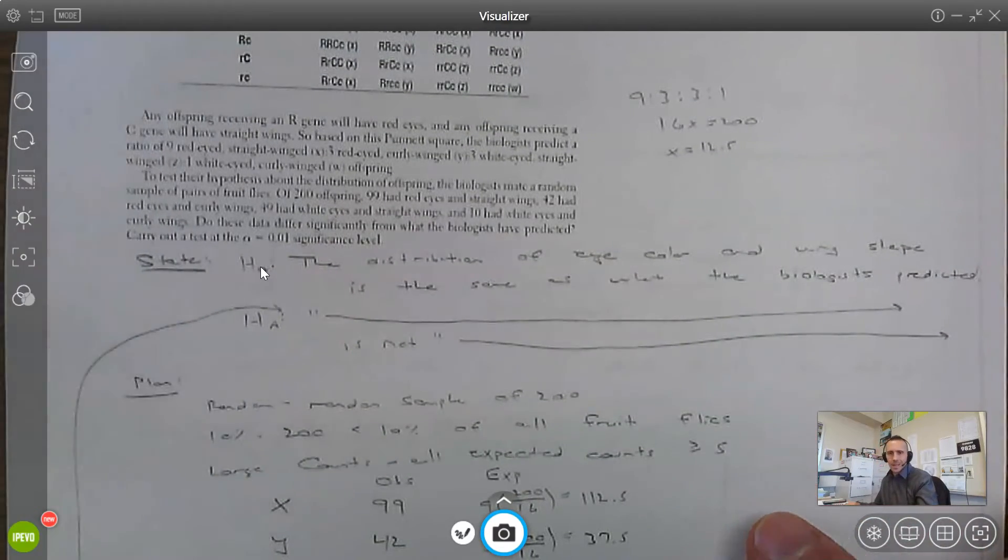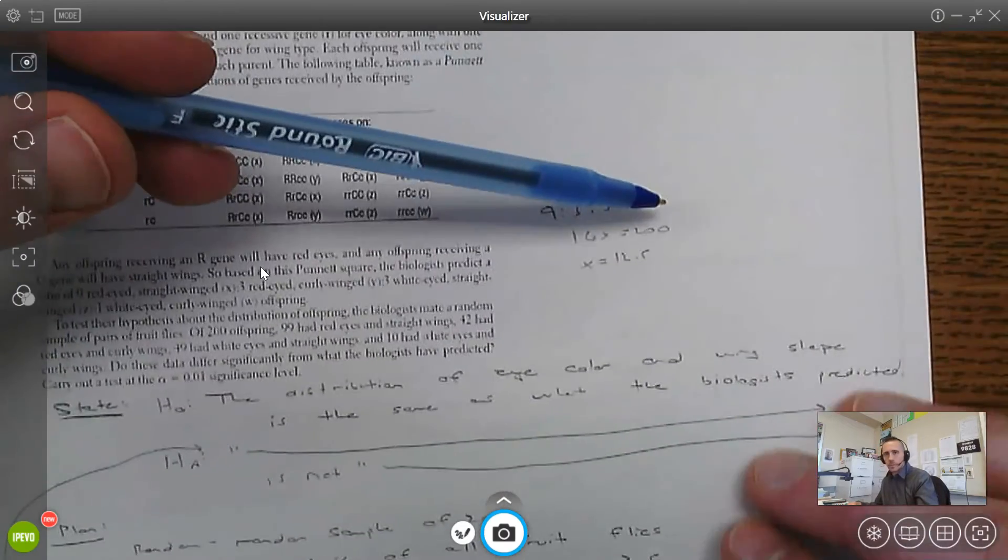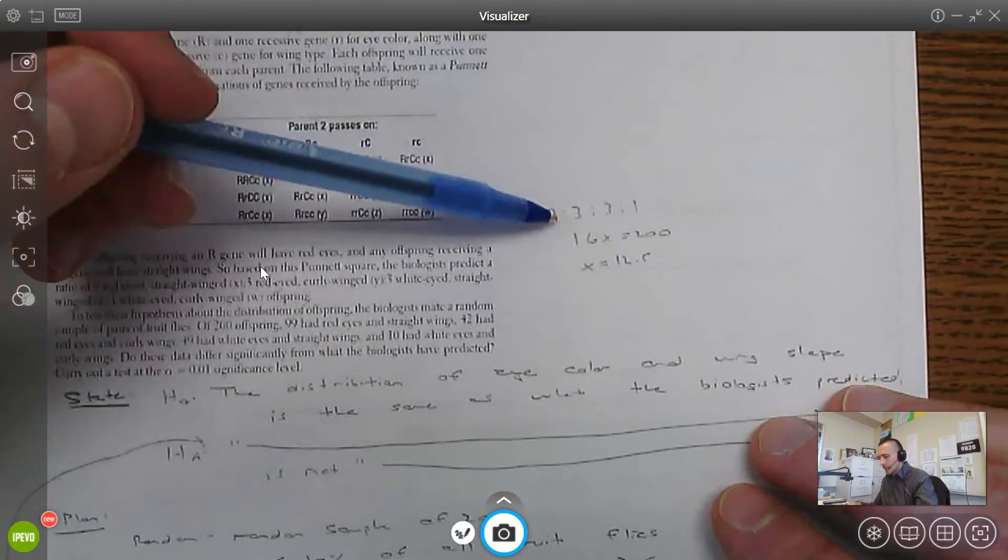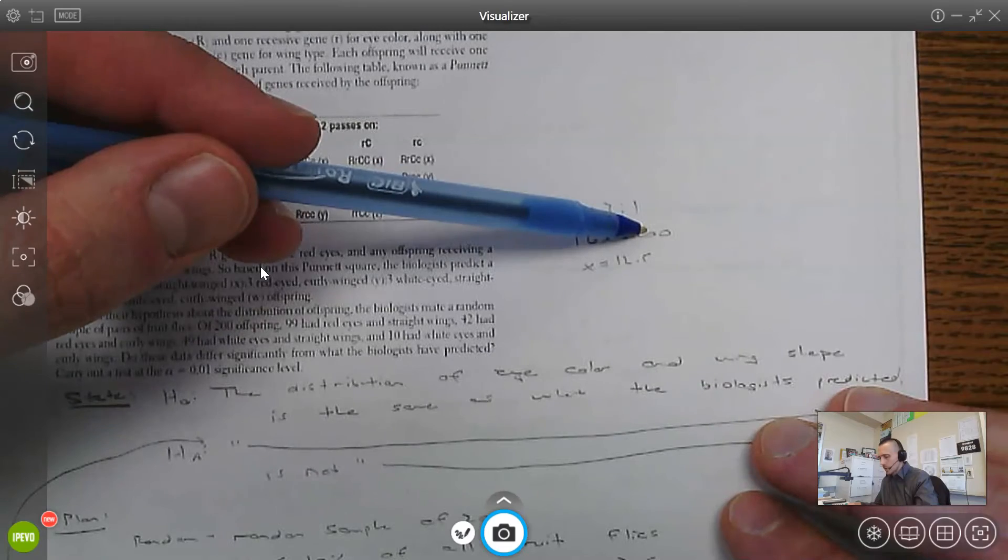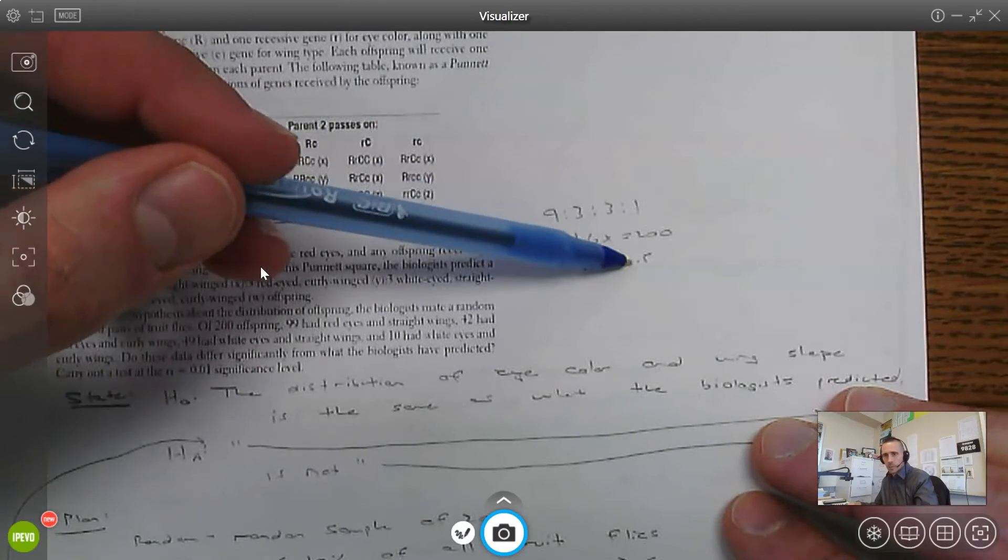The expected counts are a little tricky here. They said they have a ratio of nine to three to three to one. So that breaks it up into 16 parts. There was 200 fruit flies. So 200 divided by 16 is 12 and a half.